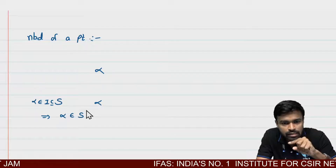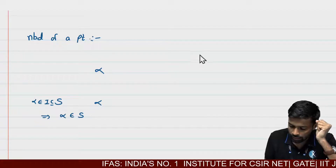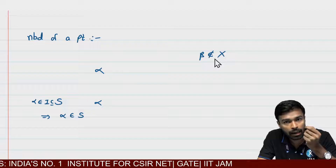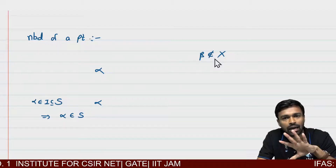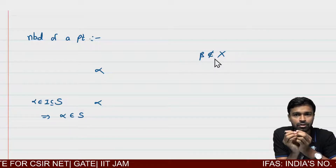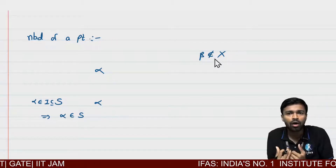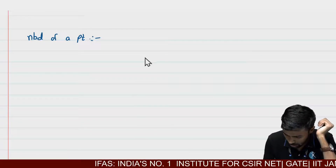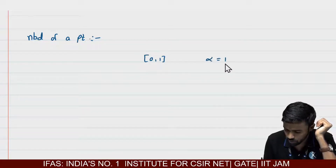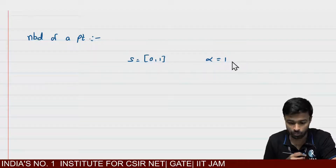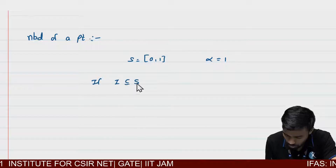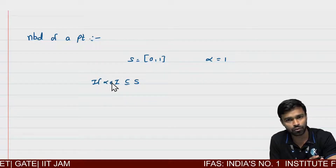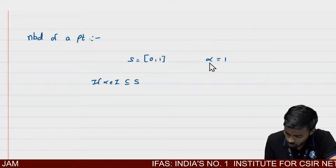If any number beta does not belong to S, then S will never be a neighborhood of that point. Basically, a neighborhood is just points which are neighbors of — close to — that point. It depends on the distance between that point and that set. So let us take S = [0, 1] and the point alpha = 1. Can I say that this S is a neighborhood of that point? No.